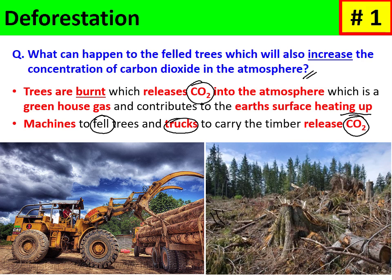A third source of increased CO2 is the decomposition of vegetation remnants by microorganisms called saprophytes — bacteria and some species of fungus. These saprophytes carry out extracellular digestion, absorb glucose, and respire it. Through cellular respiration, the saprophytes release carbon dioxide back into the atmosphere, contributing further to higher CO2 concentrations.